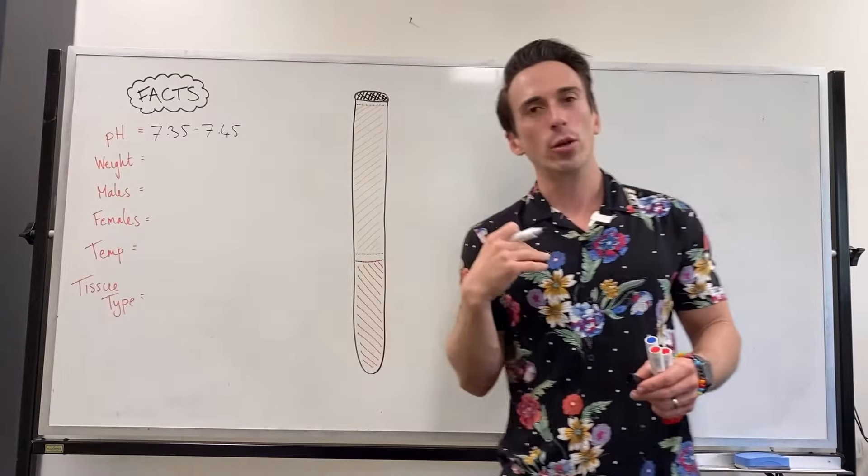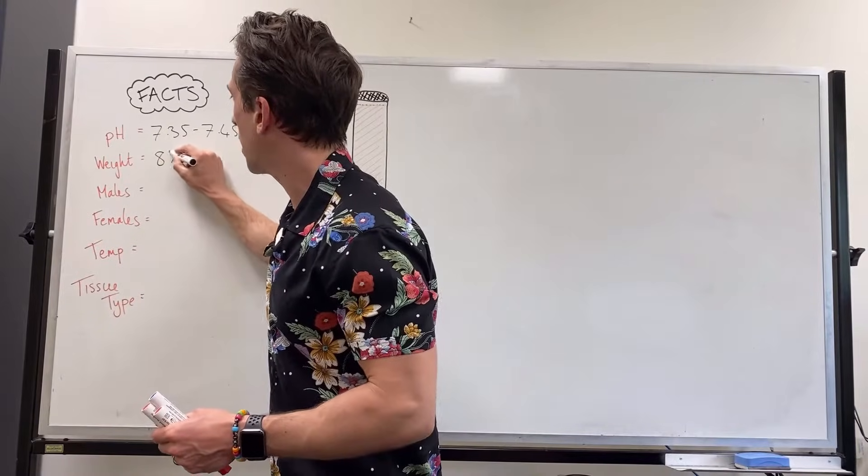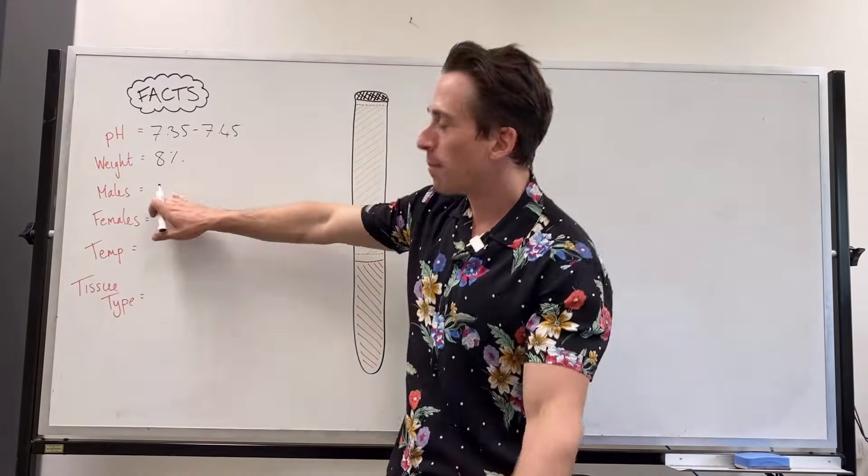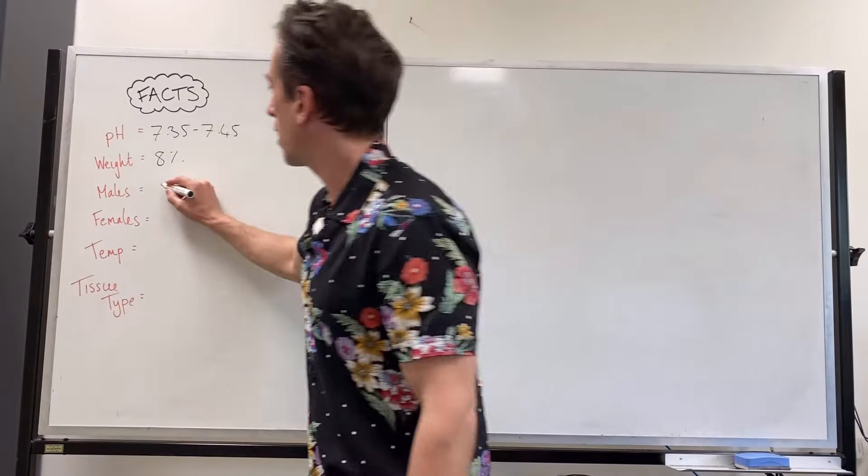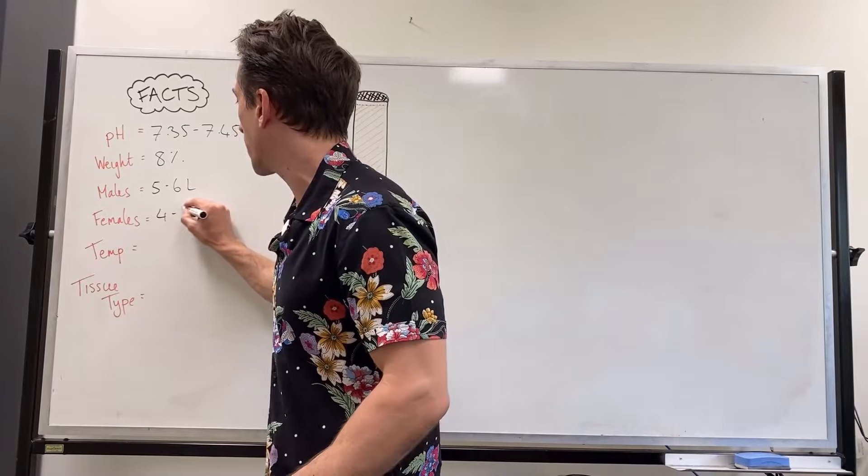Weight, how much of our body weight is actually blood? Well, it's around about 8%, 8% of our body weight is blood. For males, we contain around about 5 to 6 liters of blood and for females it's around about 4 to 5 liters of blood.